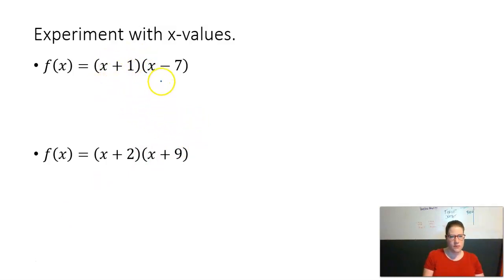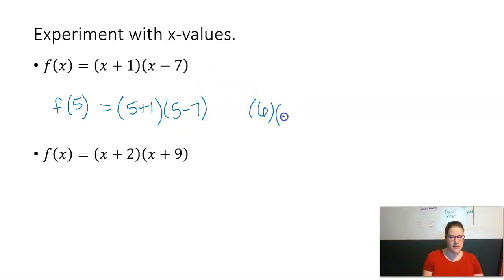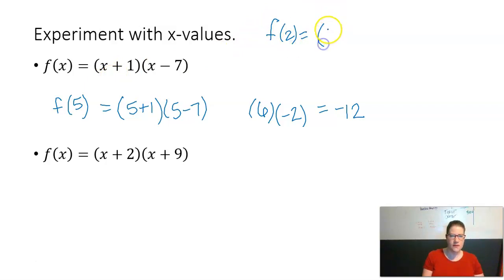If we have a quadratic that's in factored form — remember when we did factoring — if it's already in factored form, this really is just two numbers multiplied together depending on what x is. For example, if I find f(5), I plug five in for x and get (5+1)(5-7), which is 6 times negative 2. Similarly, f(2) would be (2+1)(2-7), or 3 times negative 5, which is negative 15.